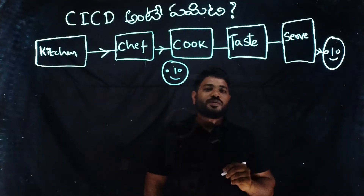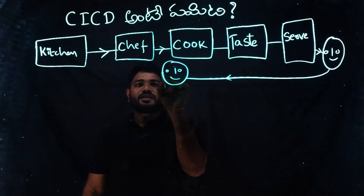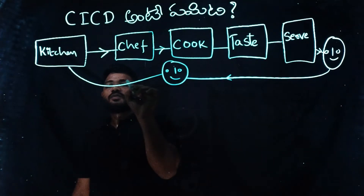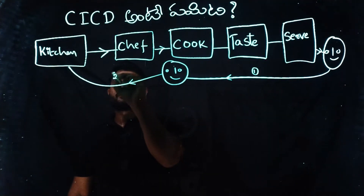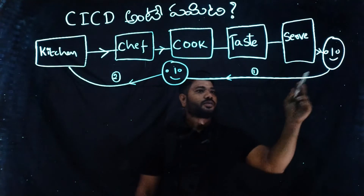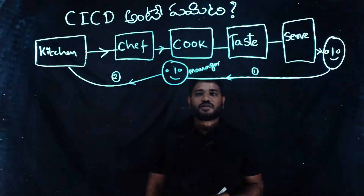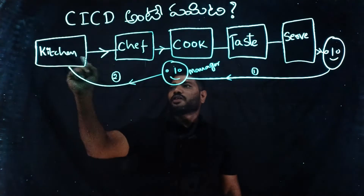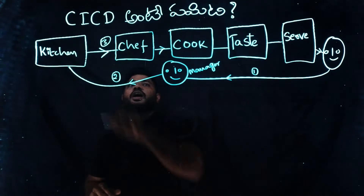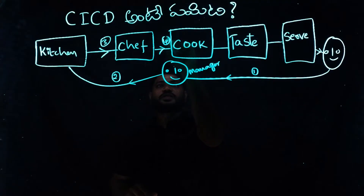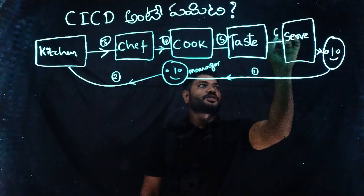When you start the first step, you order — the customer orders the manager. When you order the manager, the manager orders from the kitchen, and the kitchen receives the order. So, you do the first step and the second step. The first step: customer orders the manager. I receive the order in the second step. If you go to the kitchen, the third step is ordering the ingredients. The fourth step is cooking. The fifth step is tasting. The sixth step is delivering to the end customer.